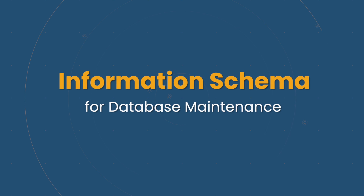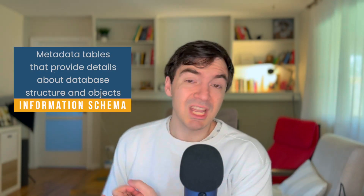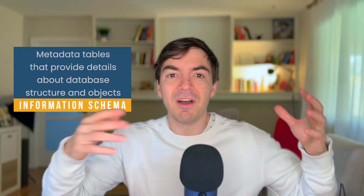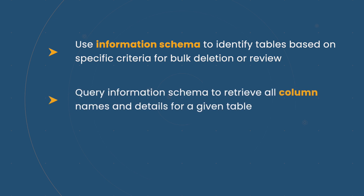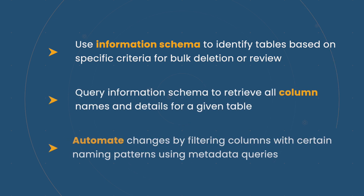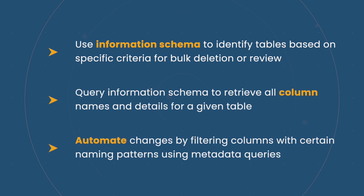Another thing is you will likely have to get comfortable with using the information schema. You can actually select data about your database — it's basically metadata about your database that tells you what tables exist. Sometimes you need that because you need to find all the tables with a certain prefix or suffix because you need to either remove or delete them. You can find all the columns inside of a table, which can be nice if you want to automate some process where you update all the columns with a certain naming structure. So it's a lot of this maintenance functionality.